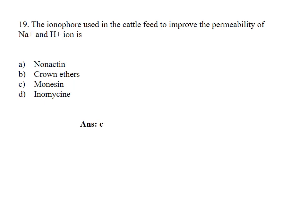The ionophore used in the cattle feed to improve the permeability of Na+ and H+ ion is: Option A, Nonactin; B, Crown ethers; C, Monensin; D, Ionomycin. Answer Option C, Monensin.